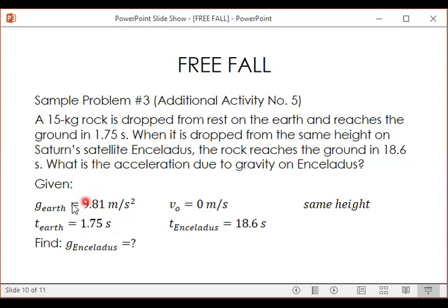So our given is the constant gravity of Earth, 9.81, and then we have the time elapsed when the rock was dropped on Earth, 1.75 seconds. And then we have the time when it was dropped on the satellite, 18.6 seconds. And it says when it is dropped from the same height.